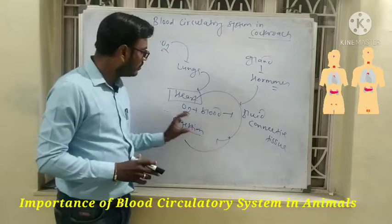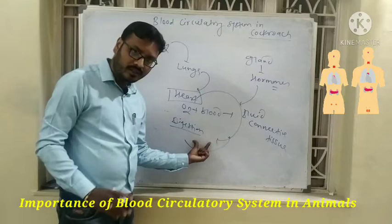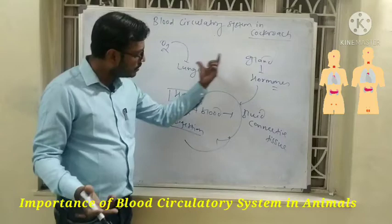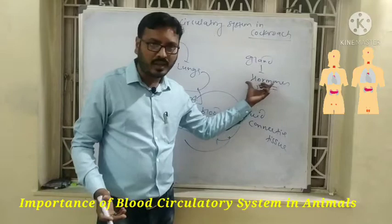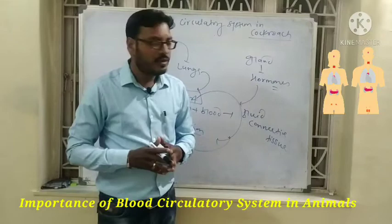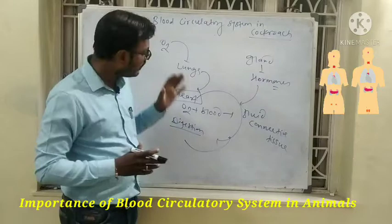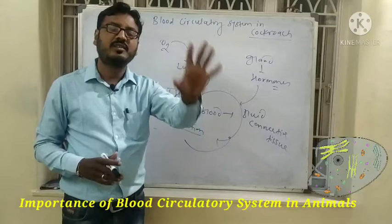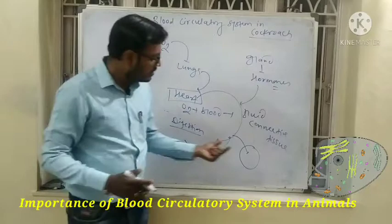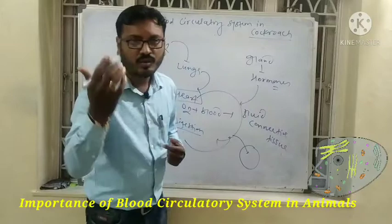When blood is circulated in our body, oxygen reaches the target organs. Nutrients from the digestive system are absorbed into the blood. The blood circulatory system is very important — essential components are delivered to the target organs, tissues, and cells, all of which have various metabolic activities.